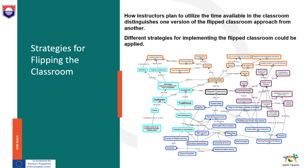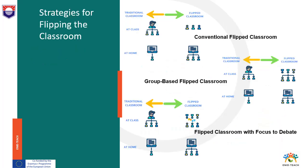How instructors plan to utilize the time available in the classroom distinguishes one version of the flipped classroom approach from another. There are various strategies for implementing the flipped classroom. In the conventional flipped classroom, before class students review course materials such as online video lectures and other resources to gain the basic knowledge needed for the next class session. The method allows teachers to spend less time teaching basic facts and more time improving their students' understanding of the material. Students use class time to improve their understanding by putting their knowledge into practice and by interacting with the instructor and their peers.